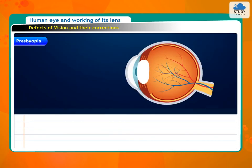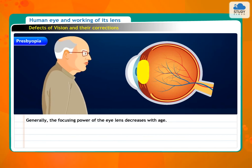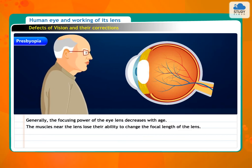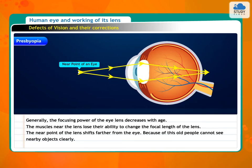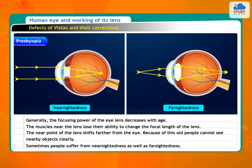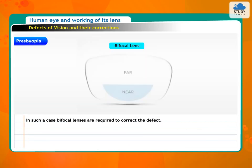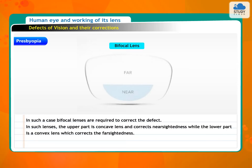3. Presbyopia. Generally, the focusing power of the eye lens decreases with age. The muscles near the lens lose their ability to change the focal length of the lens. The near point of the lens shifts farther from the eye. Because of this, old people cannot see nearby objects clearly. Sometimes people suffer from nearsightedness as well as farsightedness. In such a case, bifocal lenses are required to correct the defect. In such lenses, the upper part is a concave lens and corrects nearsightedness, while the lower part is a convex lens which corrects farsightedness.